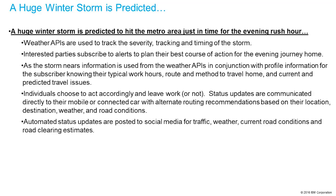In addition, we can start pushing status updates out to social media so others can see what's going on with road conditions and road clearing estimates. These three examples are just examples of multiple industries working together in an ecosystem and where the API economy is going to go over time. These are not the first scenarios you'll work on — start with those simple scenarios and work forward from there.